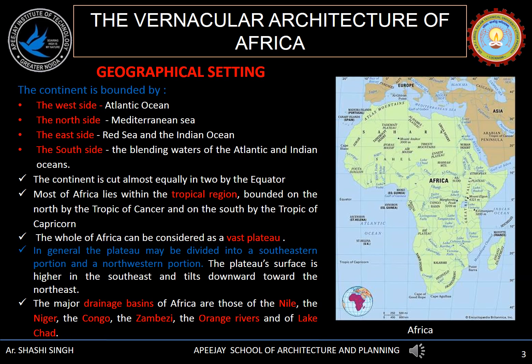Studying the geographical setting of Africa, it is bounded by the Atlantic Ocean on the west, the Mediterranean Sea on the north, the Red Sea and Indian Ocean on the east, and on the south the blending waters of the Atlantic and Indian Oceans. The continent is almost divided equally in two by the equator, and most of Africa lies within the tropical regions. Africa can be considered as a vast plateau, majorly divided into two parts: the southeastern portion and the western portion.